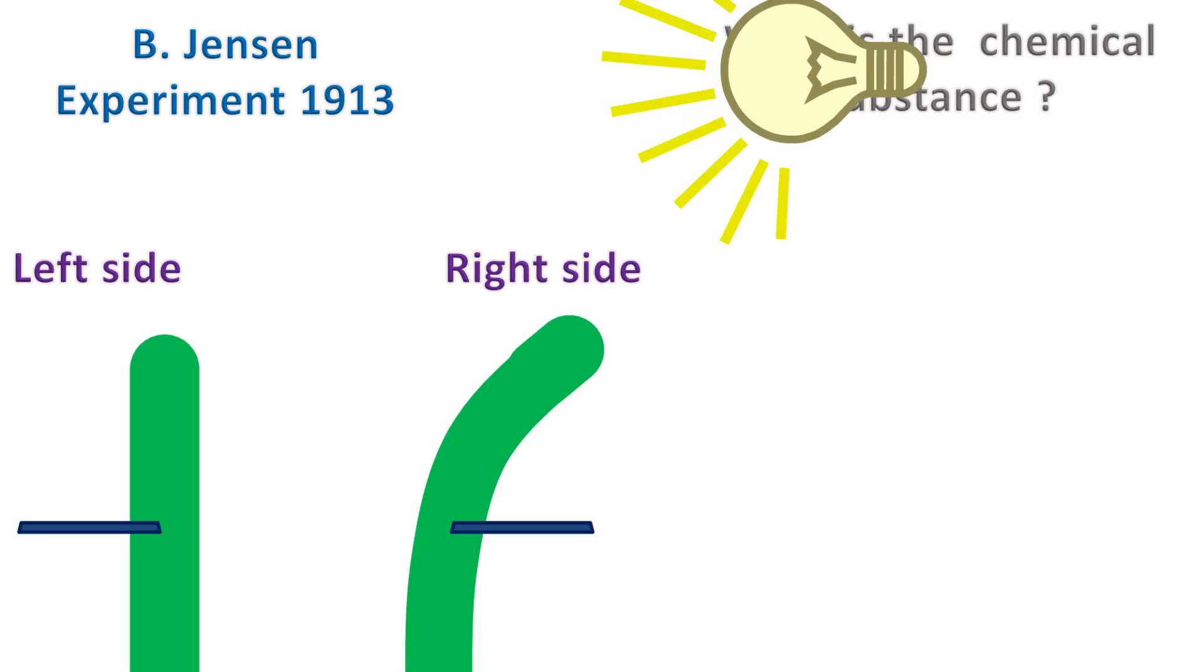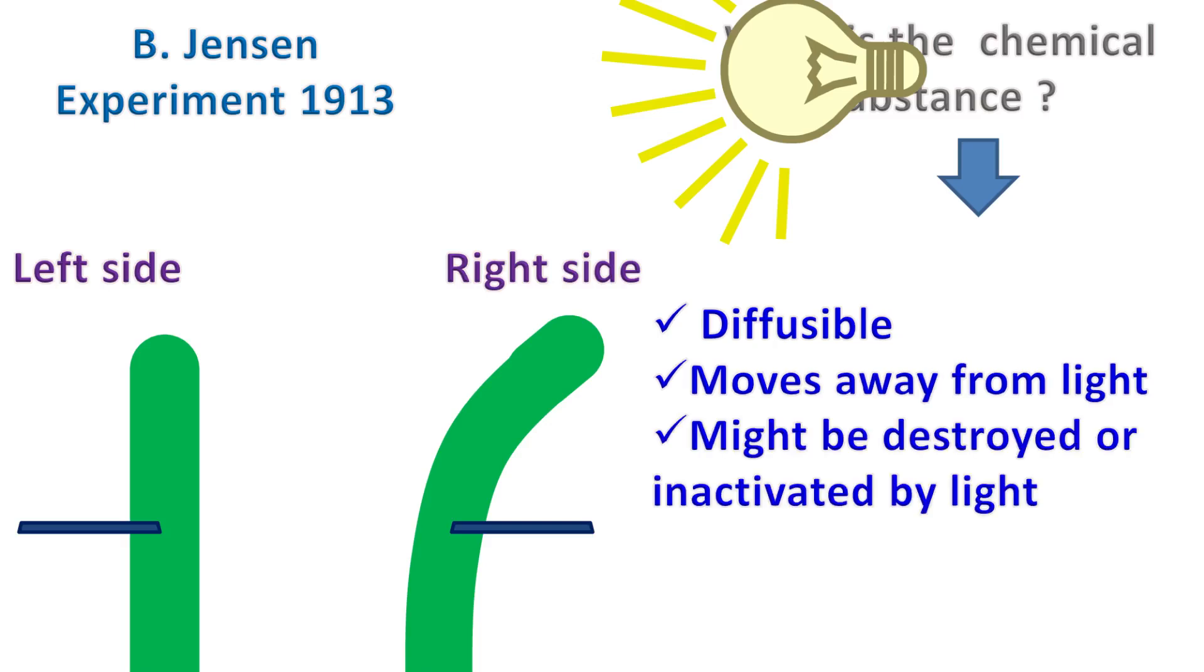This experiment shows that the chemical substance that causes bending is a diffusible substance. This substance moves away from the light and it might also be possible that it might be destroyed or inactivated by light.